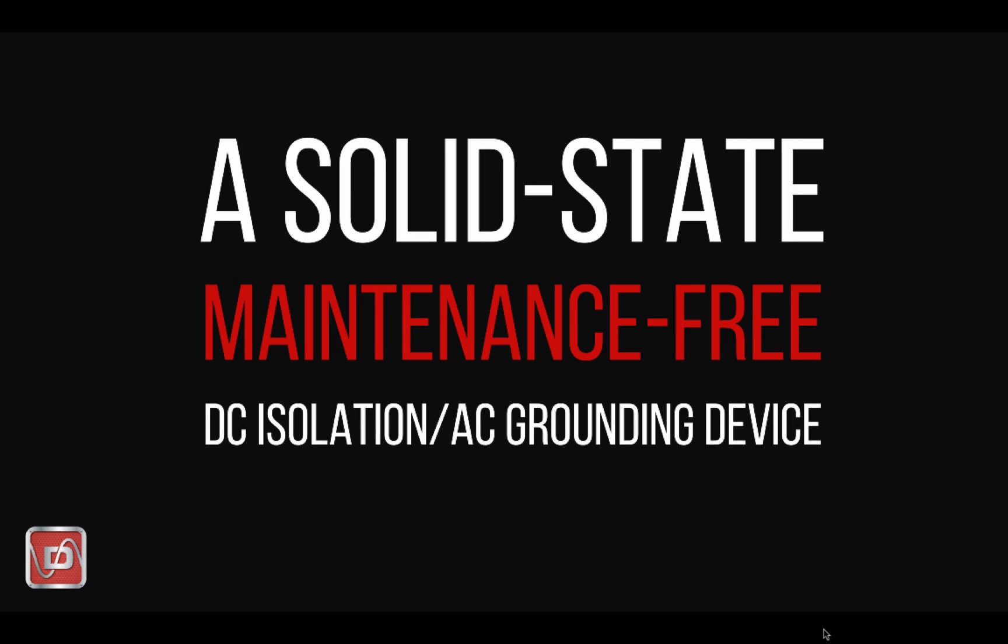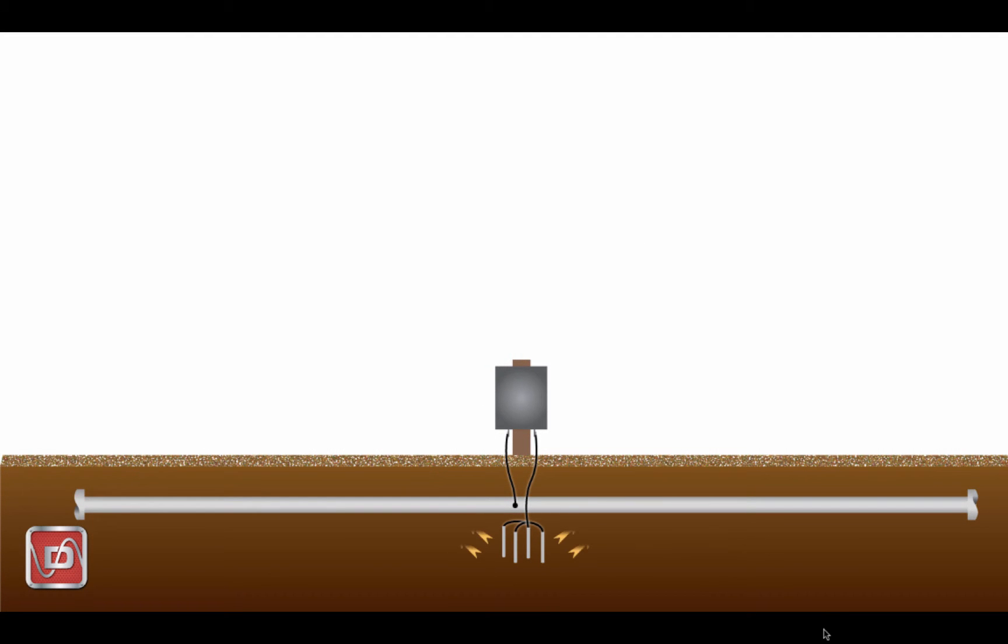Okay, moving on. Let's look at a normal AC mitigation application and discuss quickly why you should use one of these devices. Let's start with a simple pipeline with a rectifier on it. The rectifier is used to put CP current on the pipeline, providing a critical piece of the cathodic protection plan. It's pretty important that we maintain our CP system at adequate levels.